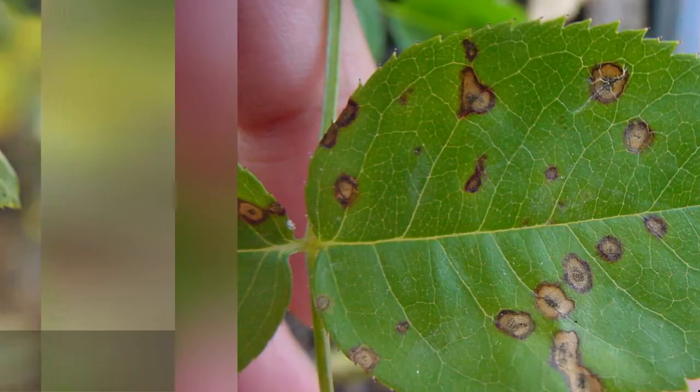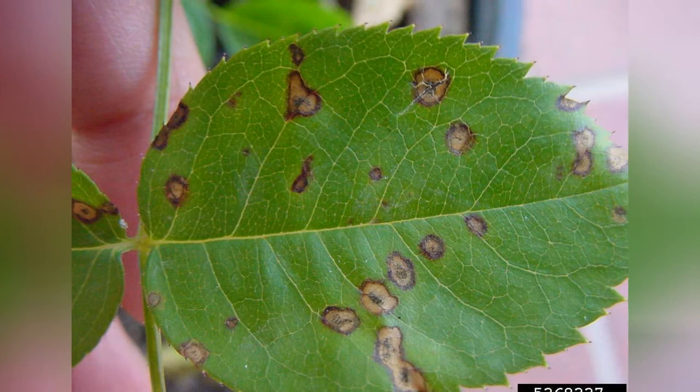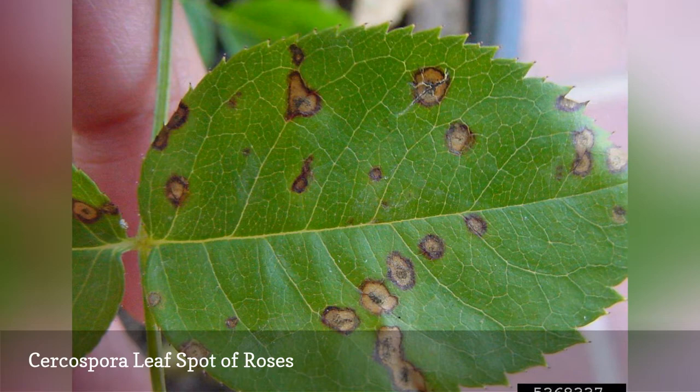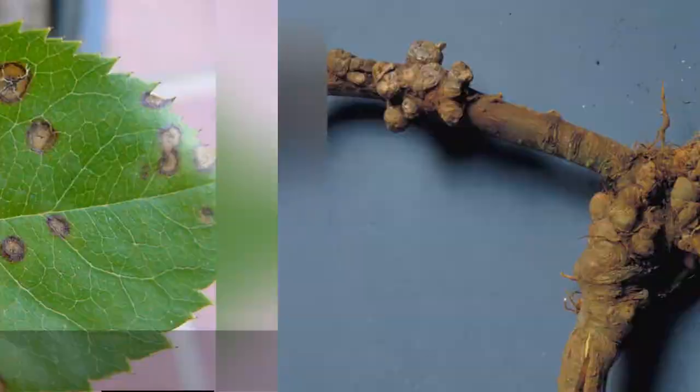Black spot is not the only fungal disease to commonly attack roses. Circospora leaf spot, sometimes referred to as rose leaf spot, is caused by the fungus Circospora rosicula. It's not the same fungus as black spot, but they share many of the same characteristics.